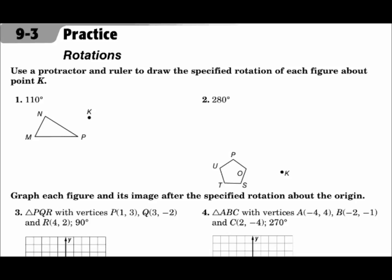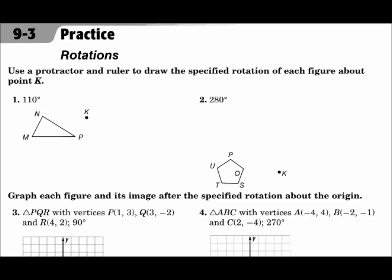This is lesson 9.3: Rotations. Your objectives are to draw rotations and to draw rotations on the coordinate plane. A rotation is a type of transformation that spins something around — you turn it around a specific point, and that point is called the center. It's important to pay attention to the point that you're rotating around, because all of your rotations and movements need to occur with respect to that point.